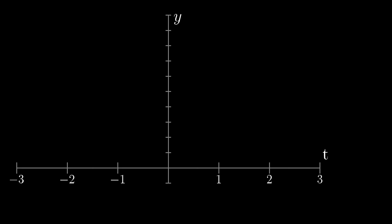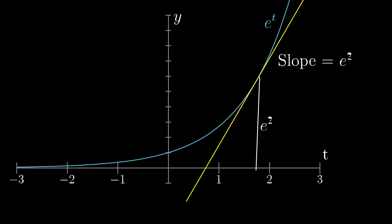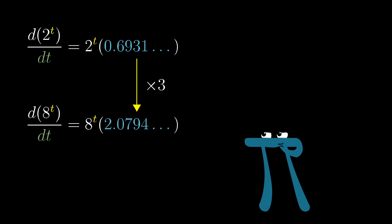One way to think of that is that if you look at the graph of e to the t, it has the peculiar property that the slope of a tangent line to any point on this graph equals the height of that point above the horizontal axis.